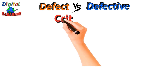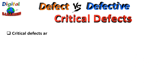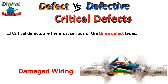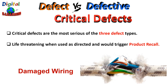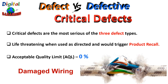Critical defects are the most serious of the three defect types. An example would be damaged wiring with copper exposed, which can endanger the product and user. Such critical defects present a risk of fire, shock, and in severe cases, death. They are life-threatening when used as directed and could trigger a product recall in industries like automotive, medical, and aviation. Critical defects normally have an acceptable quality limit equal to zero percent, and an item will often fail product inspection if a single critical defect is found.